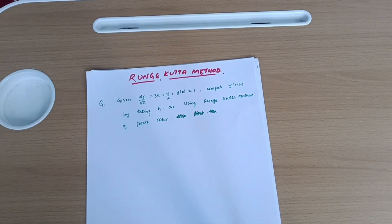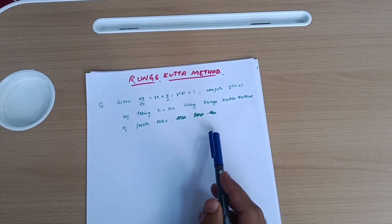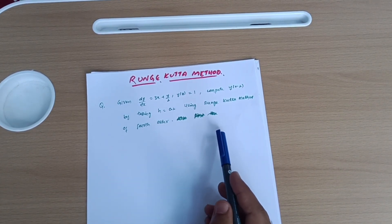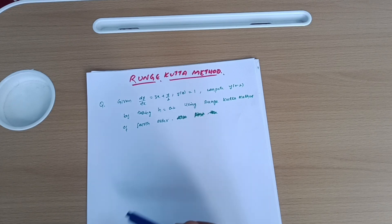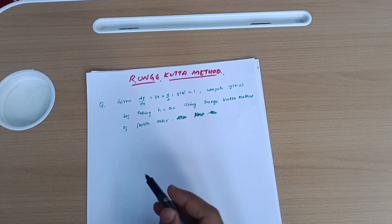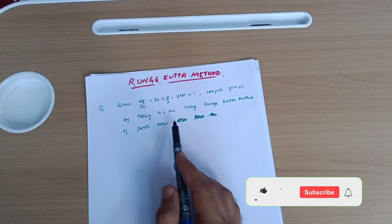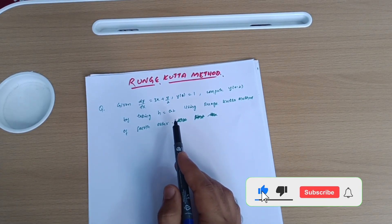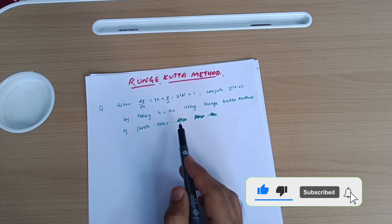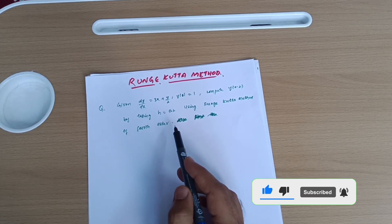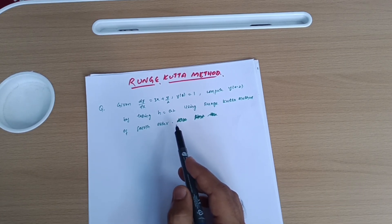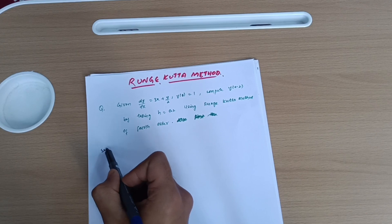Dear students, hope you are all doing well. Welcome back again into my another lecture. Today we will discuss the Runge-Kutta method — the most important seven marks question as far as mathematics is concerned. It is common to all branches, so anybody can refer to this, whether CAC stream, mechanical, civil, or whatever. Let us solve this particular question — it is totally, purely formula-based, as the formulas are readily available in your handbook, which will be handed to you in the examinations.